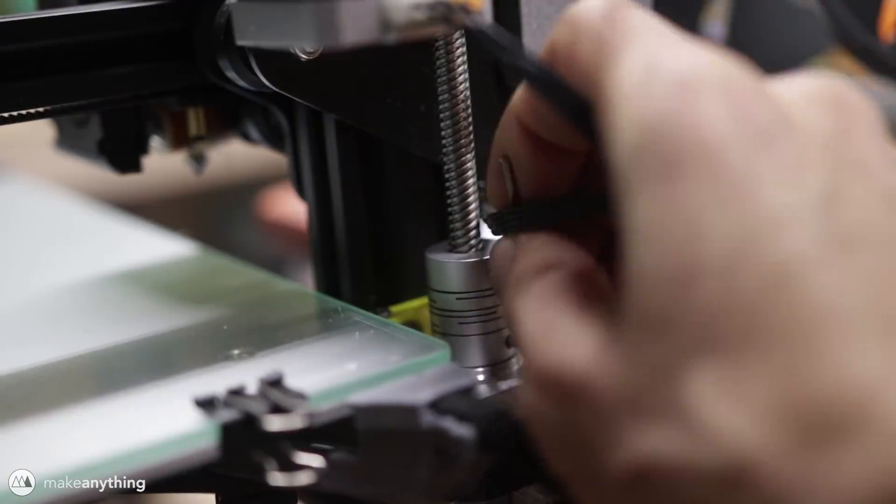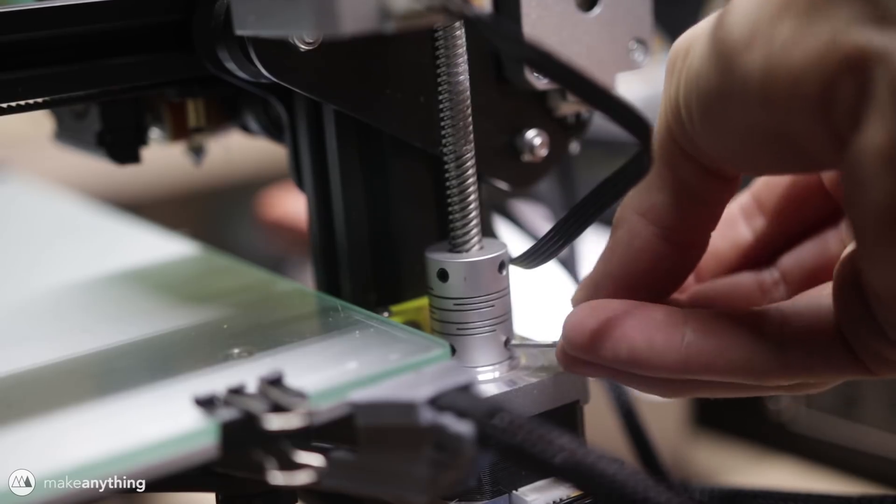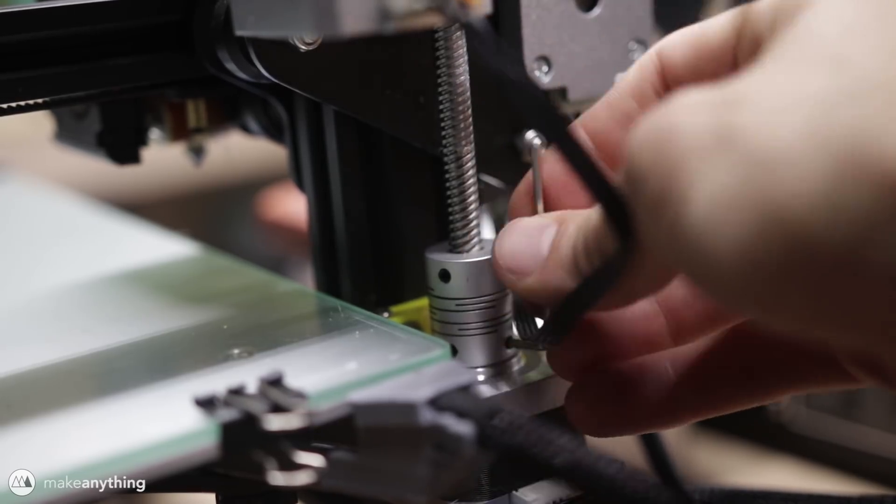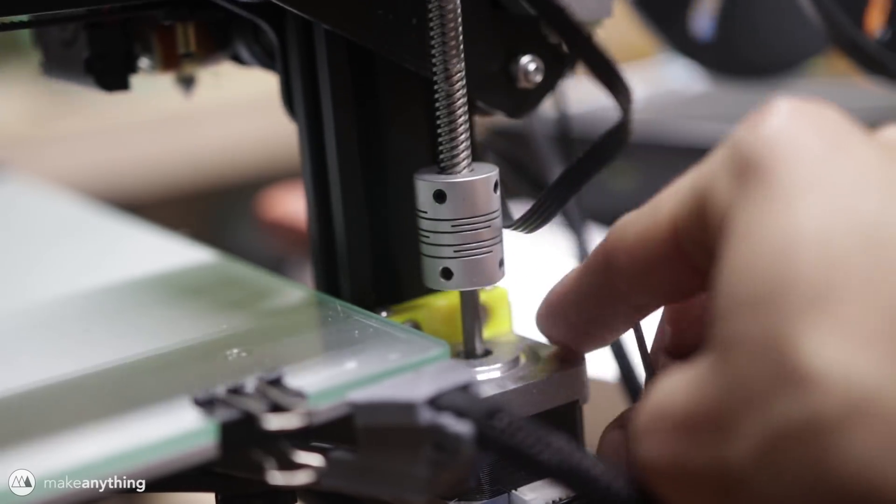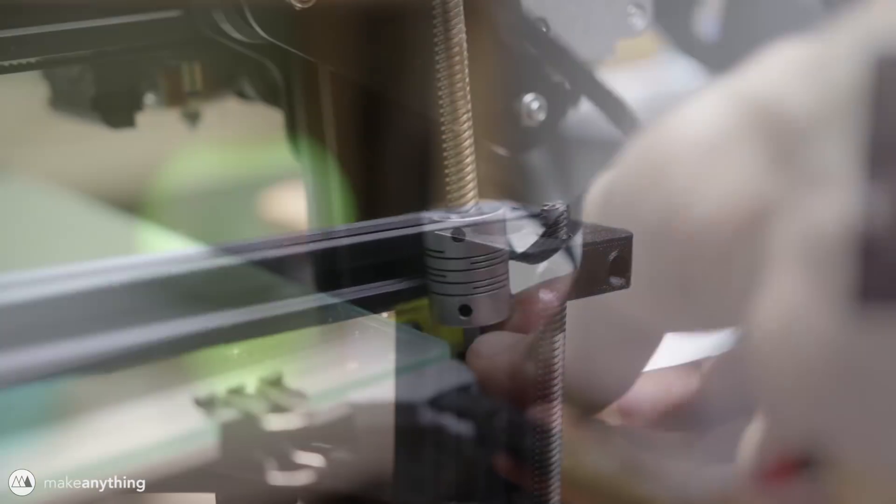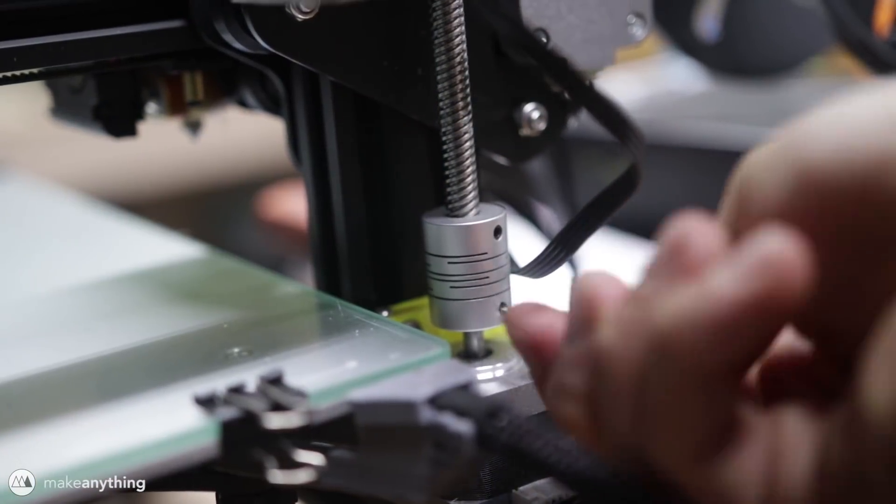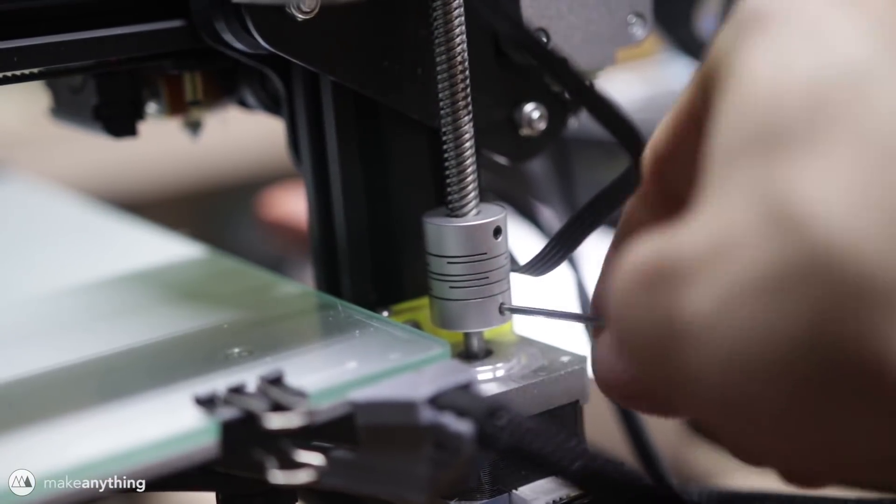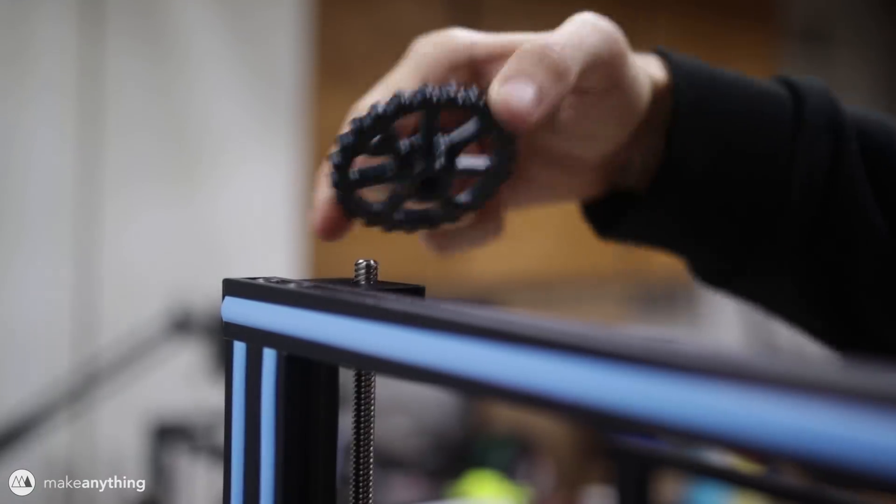The trick is to loosen these bottom screws on the dampener of the Z rod here, which allows you to move that Z rod up. And we're gonna move it up just about one centimeter so that this top part of the thread sticks a little higher than it usually does. Once that's raised up we can tighten these screws again, and then we can use the part that I printed and attach that to the top here.